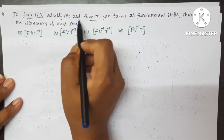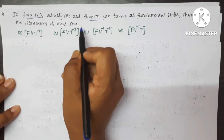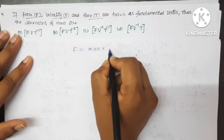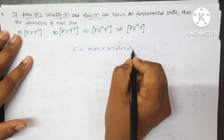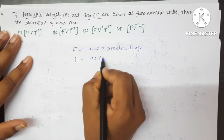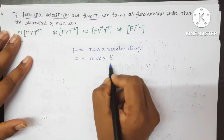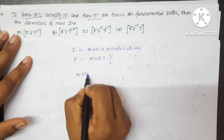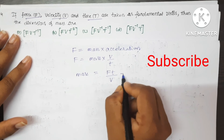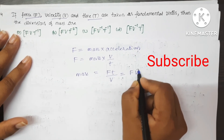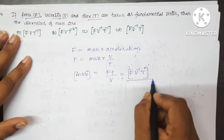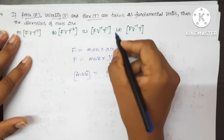If force F, velocity V, and time T are taken as fundamental units, then the dimensions of mass are: F = mass × acceleration, so mass = F·T/V, which gives F·V⁻¹·T. The correct option is D.